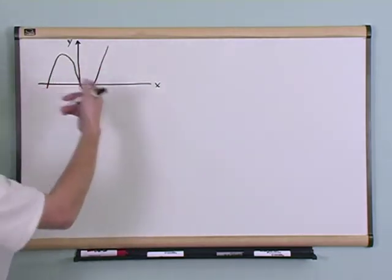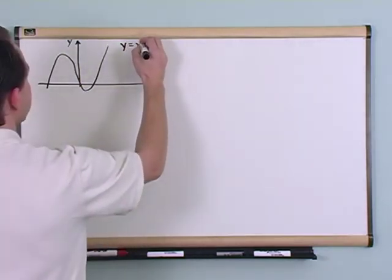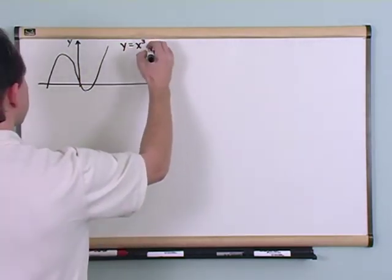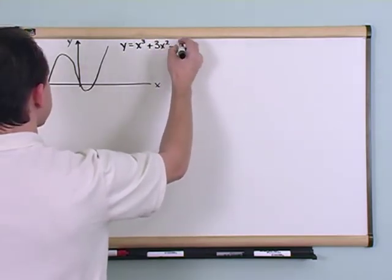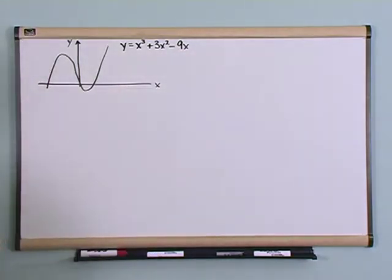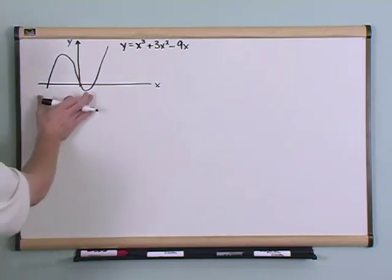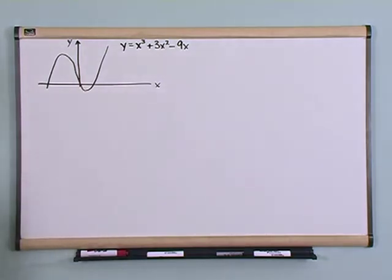Now, the equation of this graph is y is equal to x cubed plus 3x squared minus 9x. If you were to put that in your calculator, this is what it would show you. Now, I haven't labeled any tick marks here or here, what I'm interested in is the basic shape.